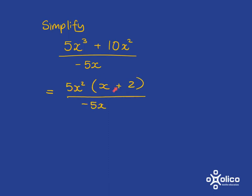Now we've got multiplication, 5x² multiplied by this bracket. So we can cancel, and we can cancel the 5 with the 5, and the x cancels with one of these x's in the x².